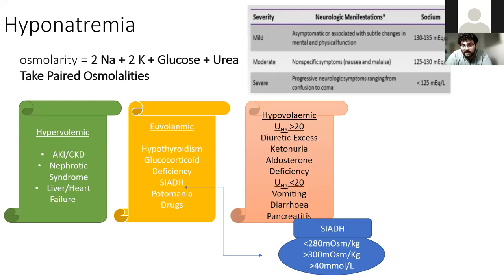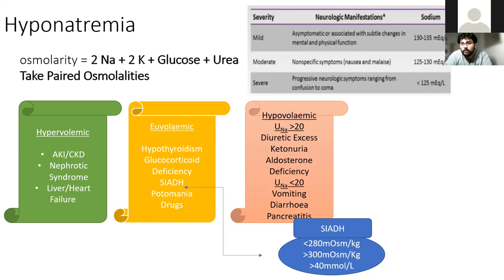If they're euvolemic — meaning no overt fluid overload, maybe just mild ankle oedema — then you need to do a proper fluid assessment. Please don't just rely on mucous membranes as a sign of hydration — they are a very poor sign of global hydration. You should be looking at central capillary refill time, skin turgor, and other markers such as urea and pulse pressure.